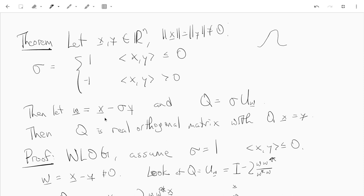So we take w to be x minus sigma y, and we take the Householder matrix corresponding to w multiplied by sigma, call that Q. And Q is a real orthogonal matrix such that Qx equals y.